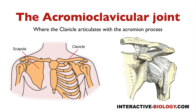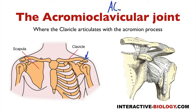The acromioclavicular joint is where the clavicle articulates with the acromion process. We have the clavicle and here we have the acromion process of the scapula — that's where they're connecting. You can also see that joint over here; it's called the AC joint for short.